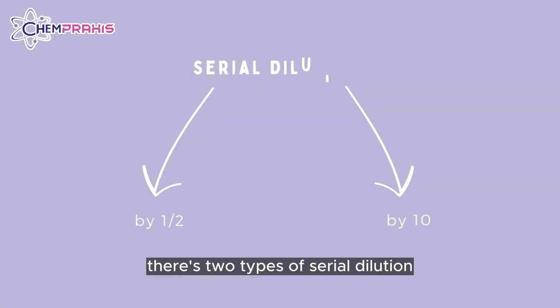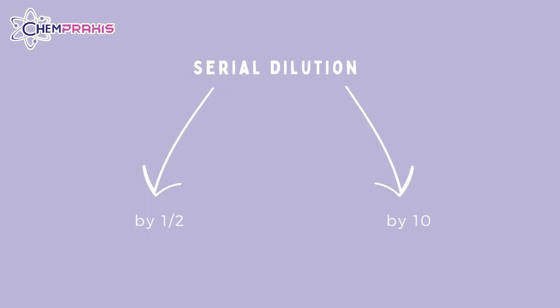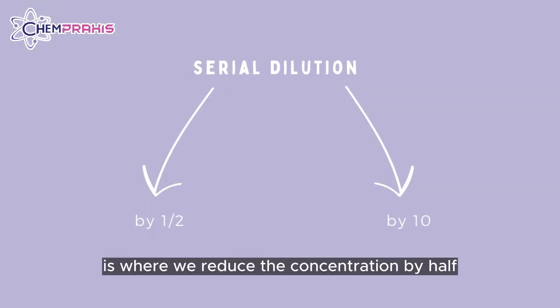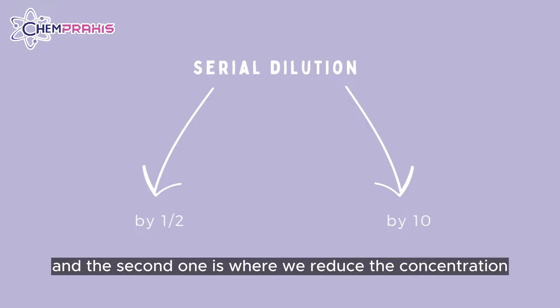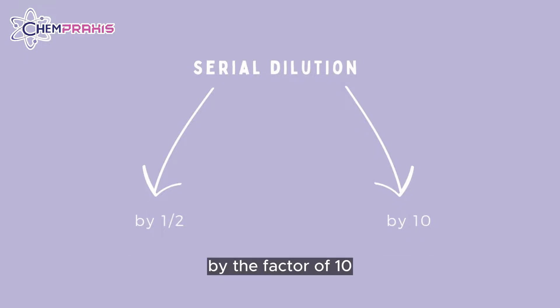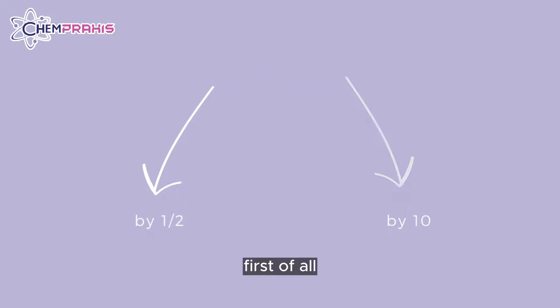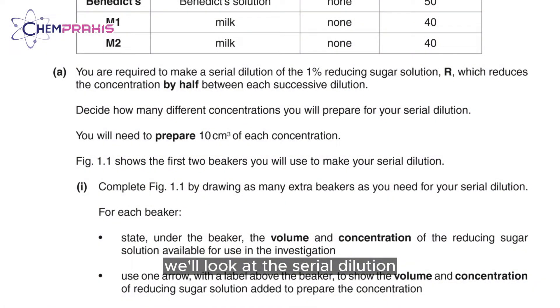There are two types of serial dilution. The first one is where we reduce the concentration by half, and the second one is where we reduce the concentration by a factor of 10. First of all, we'll look at the serial dilution that reduces the concentration by half.